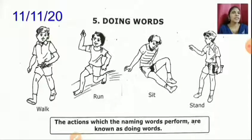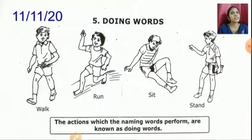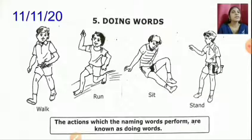The actions which the naming words perform are known as doing words. Here you can see the naming words. Let us see what action they are performing. Walk, run, sit, stand. You can see four pictures. These are the actions done by the naming words, so they are known as doing words.